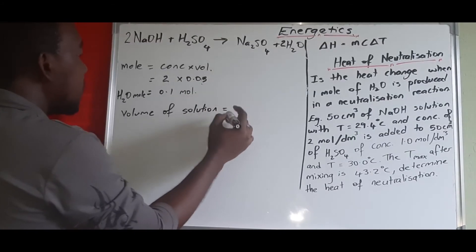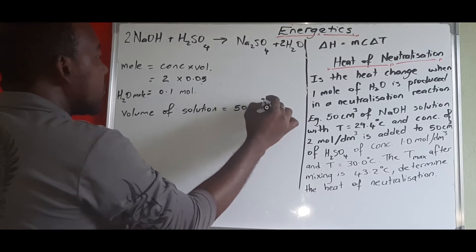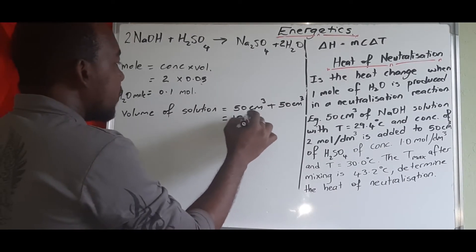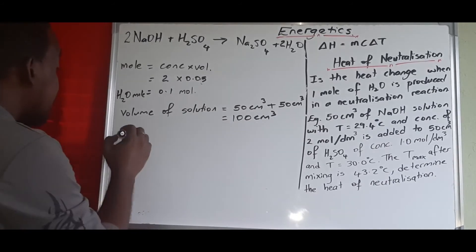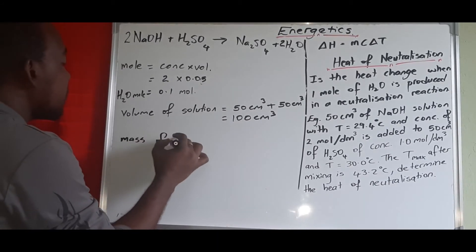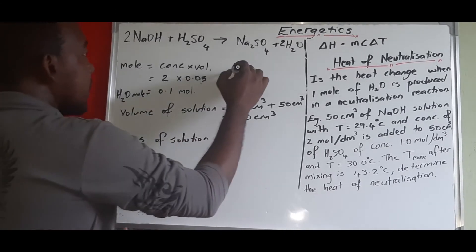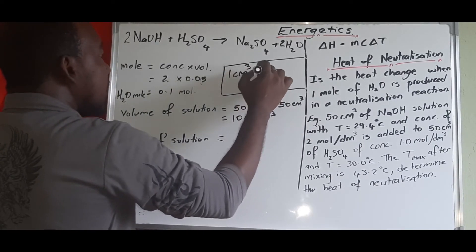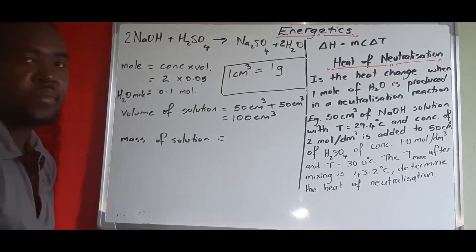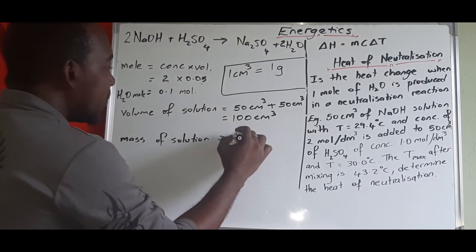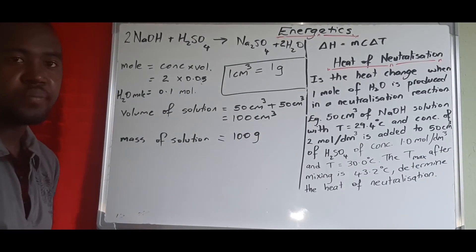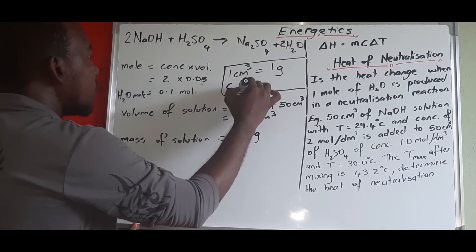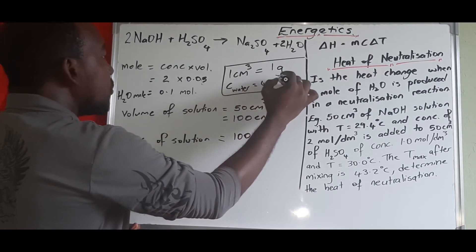The volume of the solution is 50 cm³ of NaOH plus 50 cm³ of sulfuric acid, giving 100 cm³ total. To find the mass of the solution, we use the constant that 1 cm³ of any solution equals 1 gram. Since we have 100 cm³, the mass of the solution is 100 g.